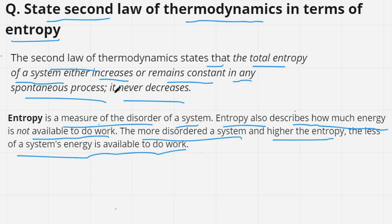Think of it like this: there are 52 cards, and they have just fallen off onto the floor. Now you have to pick all the cards and arrange them in the same order. When the 52 cards fall off, that is a spontaneous process. If you want to arrange all the cards in the same order, it will require more work or more energy, but we know we cannot use the whole energy of a system.